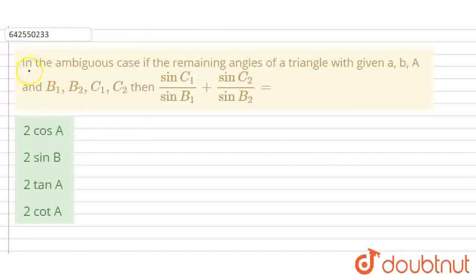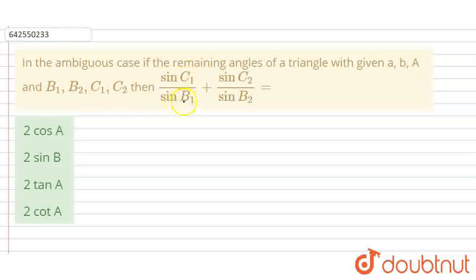Hello students, today the question is: in the ambiguous case, if the remaining angles of a triangle with given A, capital A and capital B are B1, B2, C1, C2, then find the value of sinC1 divided by sinB1 plus sinC2 divided by sinB2.